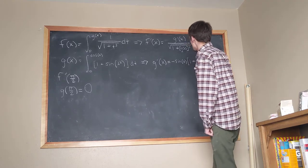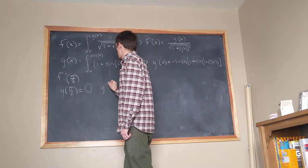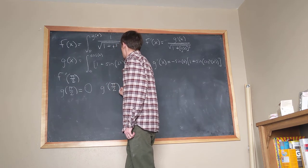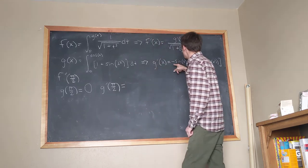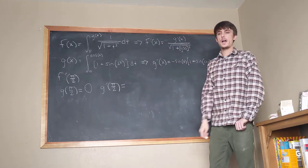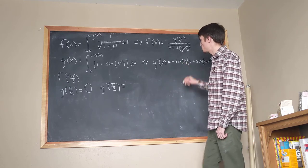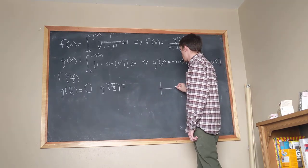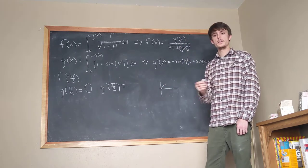Okay, and then what about g prime of pi over 2? All right, so g prime of pi over 2 is equal to negative sine of pi over 2. So what's negative sine of pi over 2? Well, sine of pi over 2, if you remember your sine graph, right, sine of 0 is 0, and then it goes up to 1 at pi over 2. So this is negative 1.